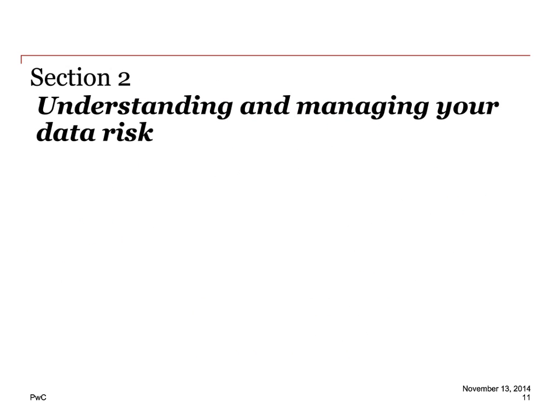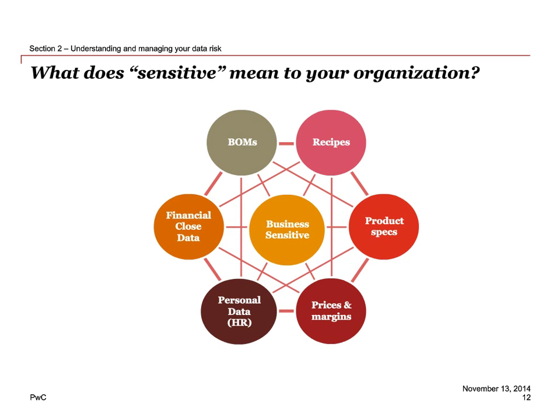Now let's get into Section 2 and the million-dollar question: what does sensitive mean to your organization? This is the first question you should ask yourself when thinking through data risk. Not all organizations will have the same type of sensitive security concerns — for one it could be related to data, for another it's an end-to-end process, or specific industry regulations may apply. It could be different across industries: chemical product specifications, retail consumer food or beverage recipes, or governance and nuclear regulations.